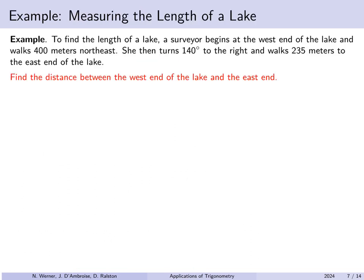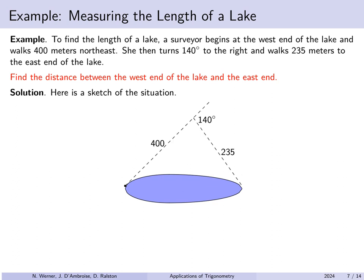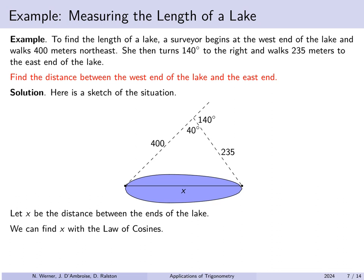Next, to find the length of a lake, a surveyor begins at the west end of the lake and walks 400 meters northeast. She then makes a 140-degree turn to the right and walks 235 meters to the east end of the lake. Find the distance between the west end and the east end. We walk from the west end 400 meters, turn 140 degrees to the right, then walk 235 meters — that leaves 40 degrees as the angle on the other side of that 140 degrees. So we label x as the distance between the ends, giving a triangle with two sides, 400 and 235, and an angle of 40 degrees between them.